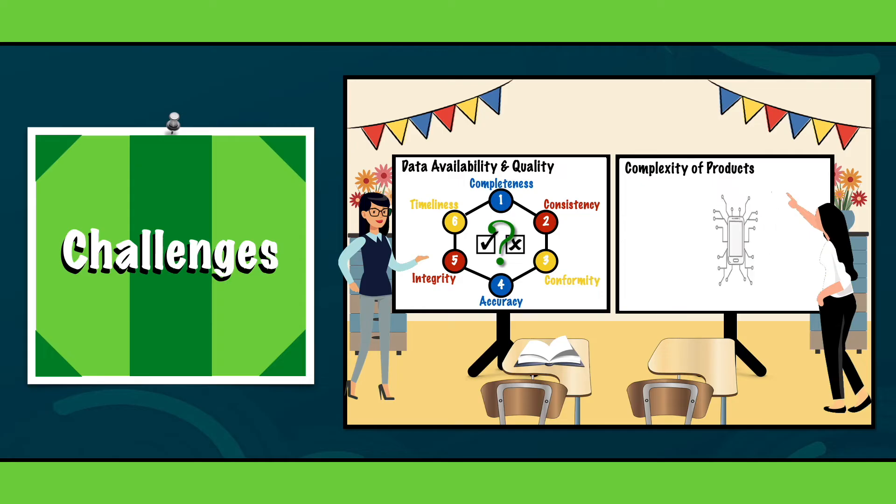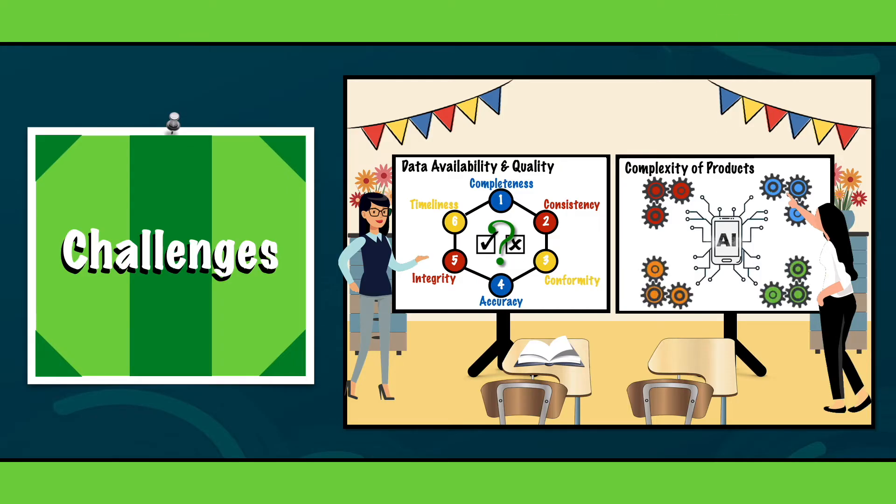Complexity of products. Many products come from complex supply chains and consist of many different components, making it difficult to assess the entire lifecycle accurately. This can lead to gaps in datasets and potential inaccuracies in the impact assessment.